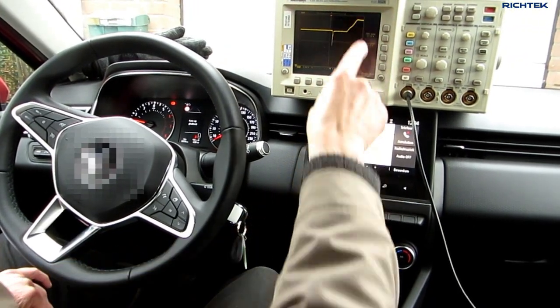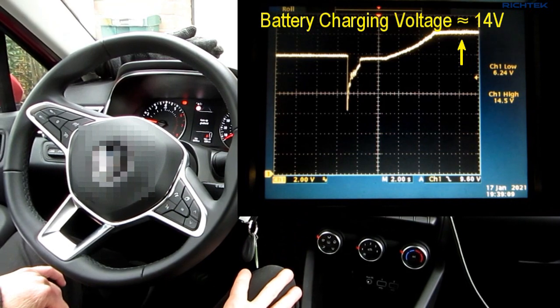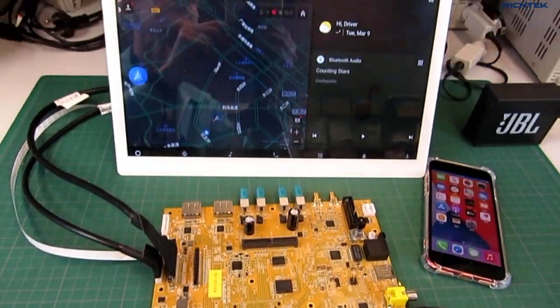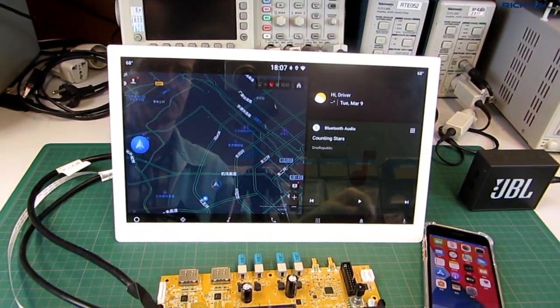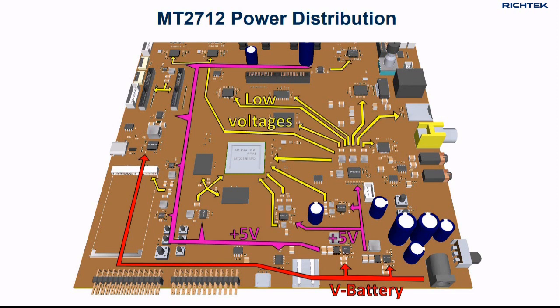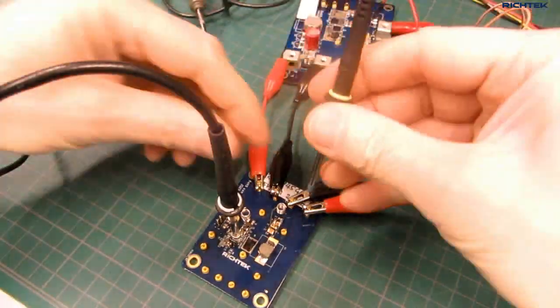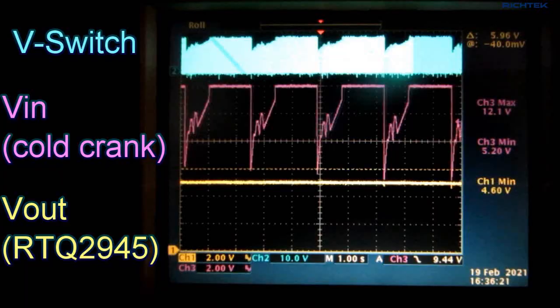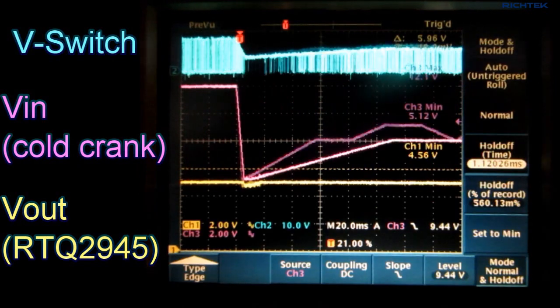In this video we'll explain car battery voltage behavior during cold cranking, I will introduce the MediaTek car infotainment system board power tree, and tell you more about automotive pre-converter design with respect to cold cranking and EMI.